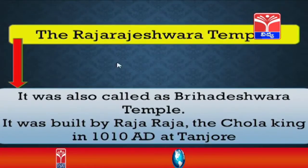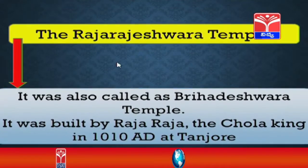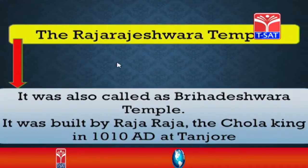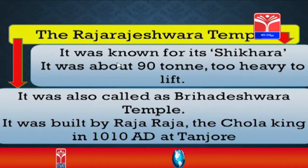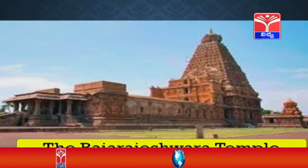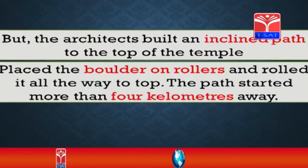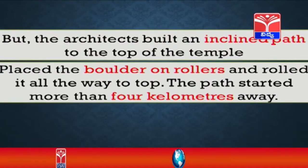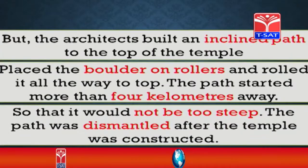Let us see another great construction — the Raja Rajeshwara temple, also called the Brihadeshwara temple. It was built by Raja Raja, the Chola king, in the year 1010 CE at Tanjore. It was known for its shikhara — the top of the temple. The shikhara weighed about 90 tonnes, too heavy to lift. The architects built an inclined path to the top of the temple, placed the boulder on rollers, and rolled it all the way to the top.